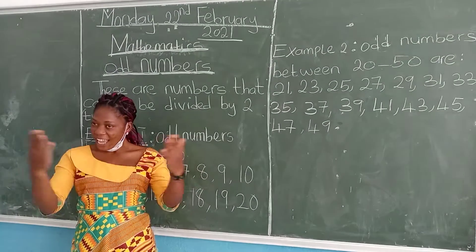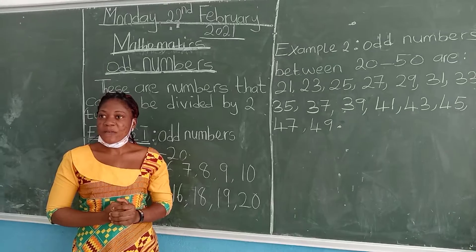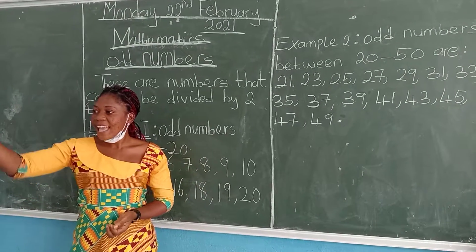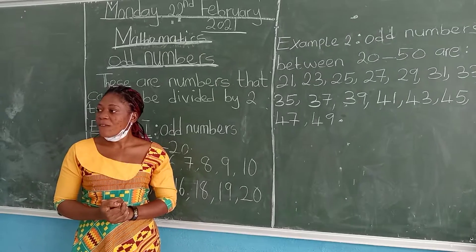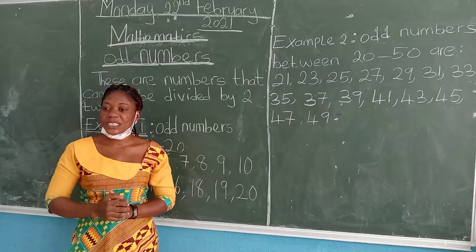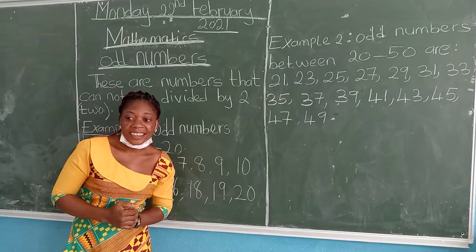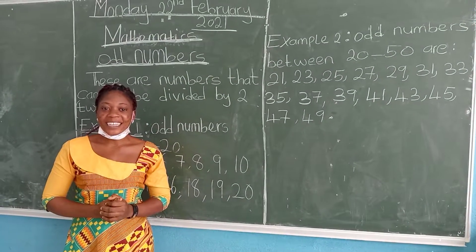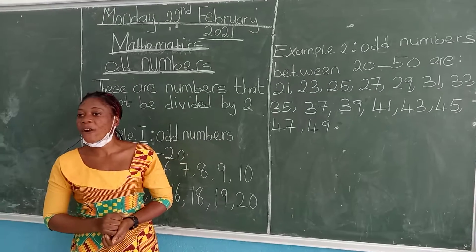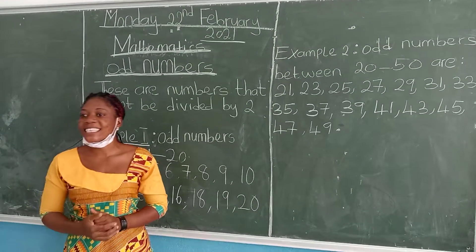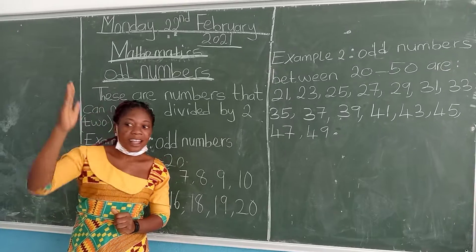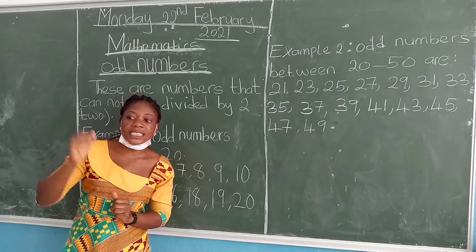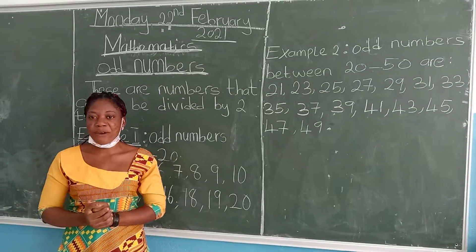Can we list even numbers between one and ten? Sarah said the first even number is two. Sophia said four. Asante said six. Federico said eight. And Levi, the last even number between one and ten — ten. Excellent!